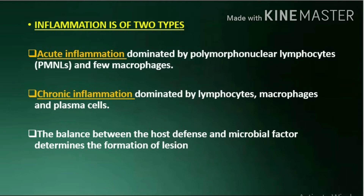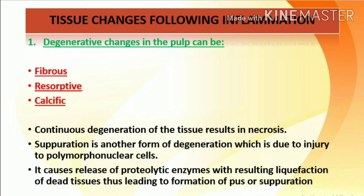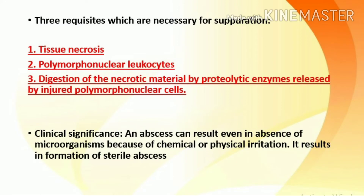The balance between host defense and microbial factors determines the formation of a lesion. Degenerative changes in the pulp can be fibrous, resorptive, or calcific. Continuous degeneration of tissue results in necrosis. Suppuration is another form of degeneration due to injury to polymorphonuclear cells, causing release of proteolytic enzymes with resulting liquefaction of dead tissues, leading to formation of pus. Three requisites necessary for suppuration are: tissue necrosis, polymorphonuclear leukocytes, and digestion of necrotic material by proteolytic enzymes. Clinically, an abscess can result even in the absence of microorganisms due to chemical or physical irritation, resulting in a sterile abscess.